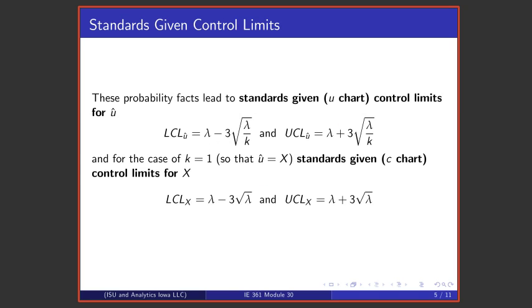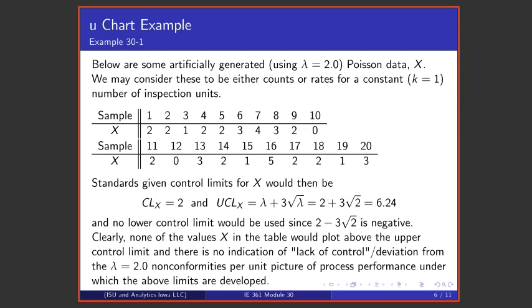These form the basis for control chart limits. If one takes, for example, for u-hat, a mean minus three standard deviations, one has that. Mean plus three standard deviations, one has the formula for an upper control limit for u-hat. If instead of varying k or k that is other than one, one always has one inspection unit per period, then the special case of this is just the c-chart control limits that are lambda minus three square roots of lambda plus three square roots of lambda.